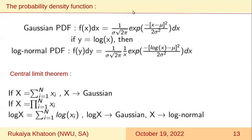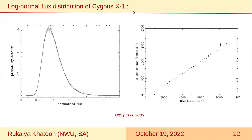So this log-normal behavior — here I show the mathematical functions of the Gaussian and the log-normal functions, such that the log-normal function is nothing but the Gaussian one, except the variable x is replaced by its logarithm. And here I will mention that when the log-normal variability was initially observed in the X-ray emission from the galactic black hole binary, it was usually interpreted as variation from the accretion disk, which is multiplicative in nature.